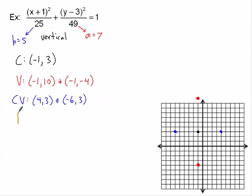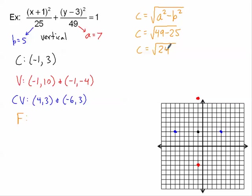Now find the foci. c equals the square root of a squared minus b squared, which is the square root of 49 minus 25, equals the square root of 24. That's not a perfect square, so the approximation is about 4.9. Counting approximately 4.9 units up and down from the center, the foci are approximately (−1, 7.9) and (−1, −1.9).